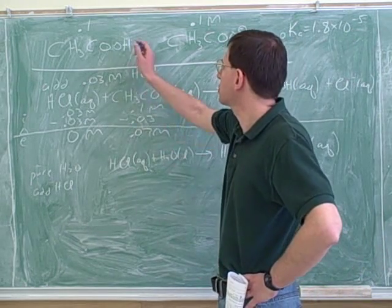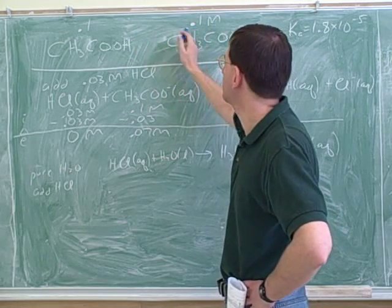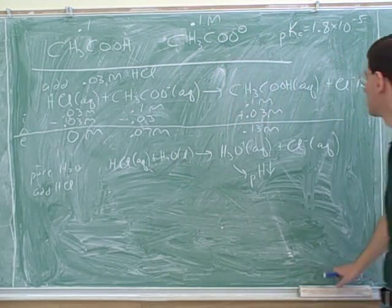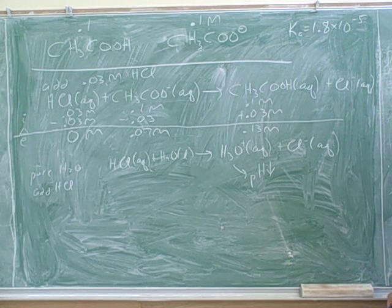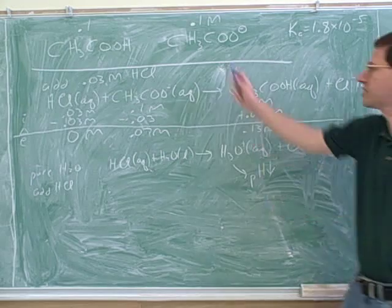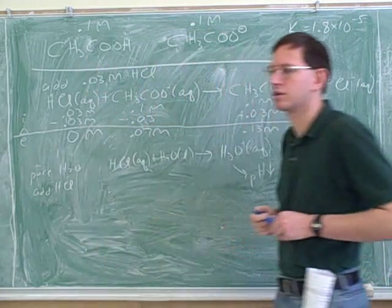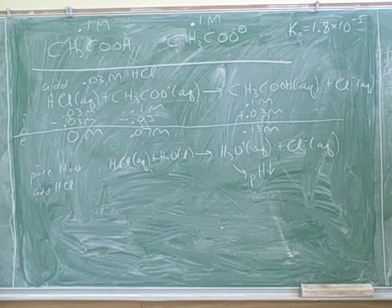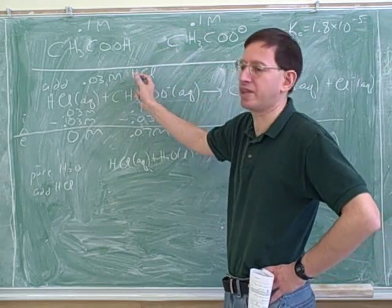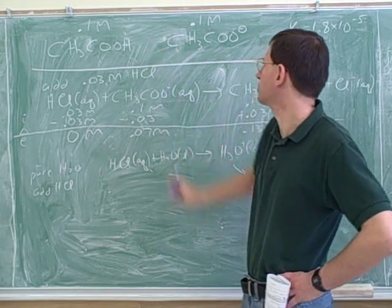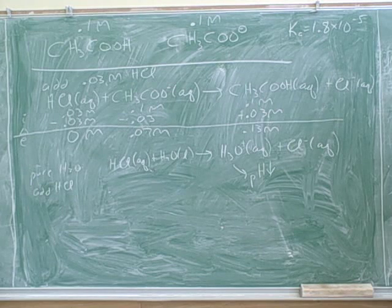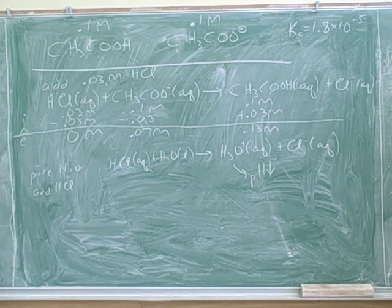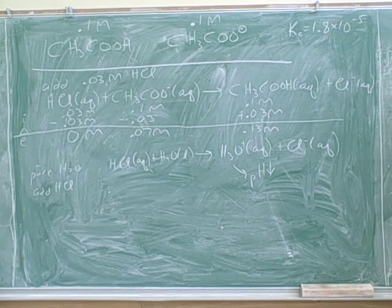Going back to the original problem: what was the original pH when we had 0.1 molar acetic acid and 0.1 molar acetate? How would you find it? One approach: Ka equals the concentration of H+ times the concentration of the conjugate base, divided by the concentration of the acid.